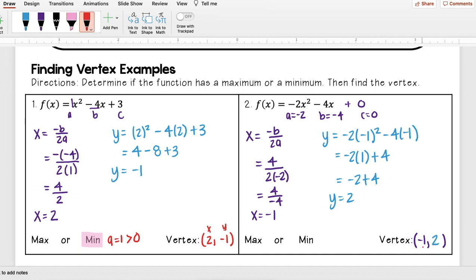So that means my vertex here is (-1, 2). Now I need to determine whether this is a maximum or minimum. Well, a = -2, which is less than 0. So that means this is a max.